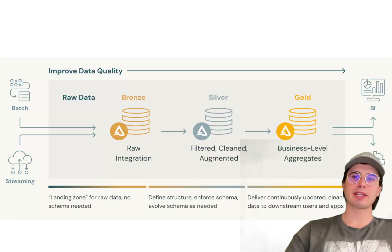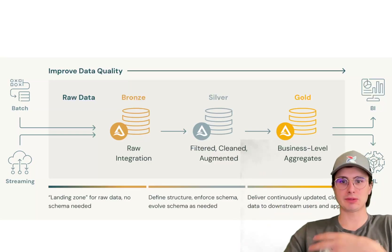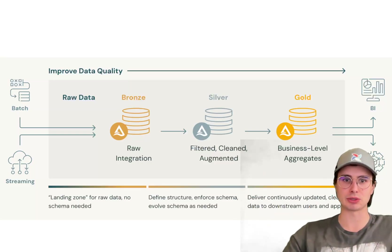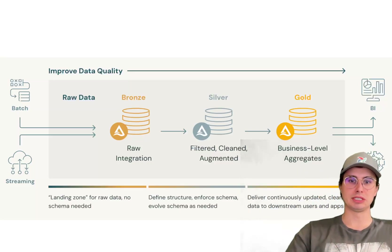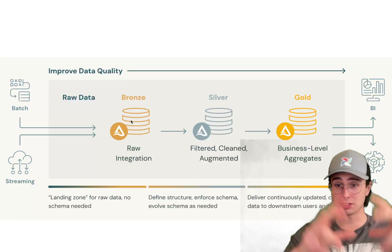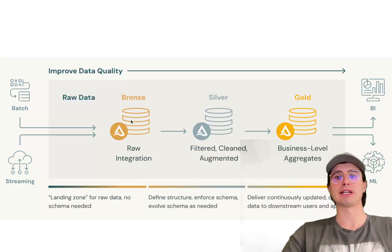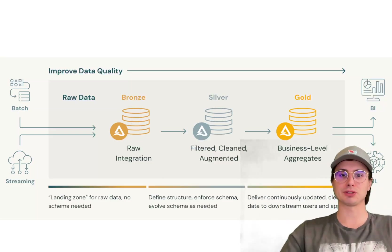You want to think of this as a layered data processing and organizational framework where you have your data segmented into those three distinct bronze, silver, and gold layers. Within each of these layers, the bronze layer is first — it's the raw, unprocessed data derived from source systems. This is where you're still going to preserve data in its raw format for auditing, for exploratory analysis, and use this as your initial source of truth.